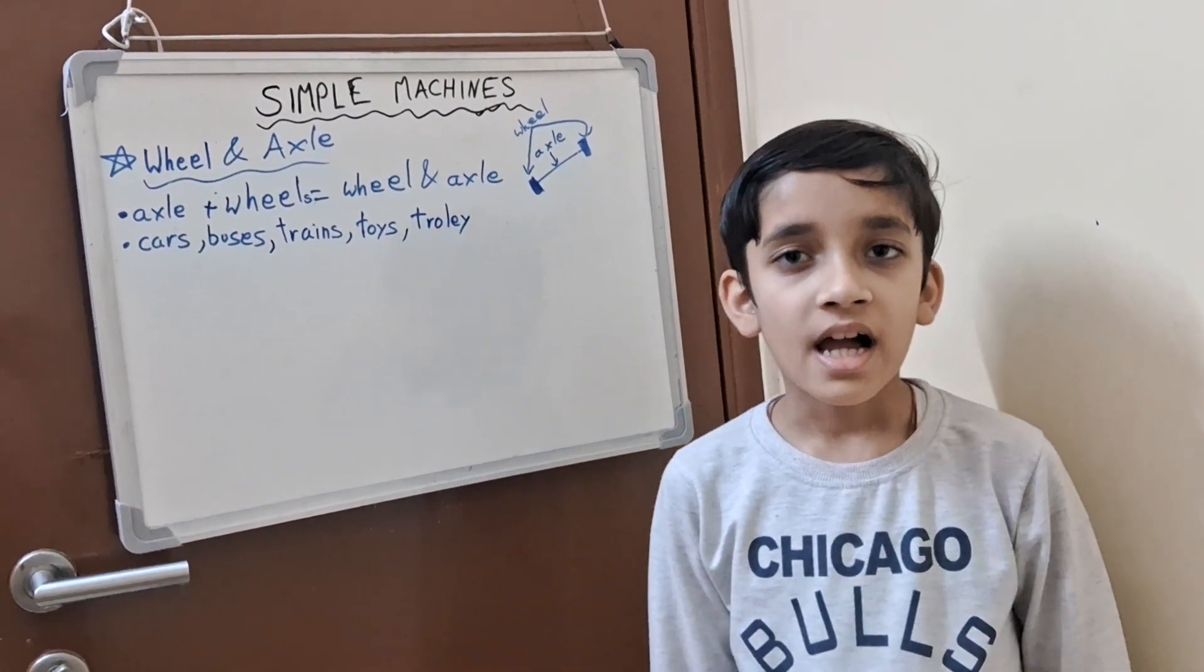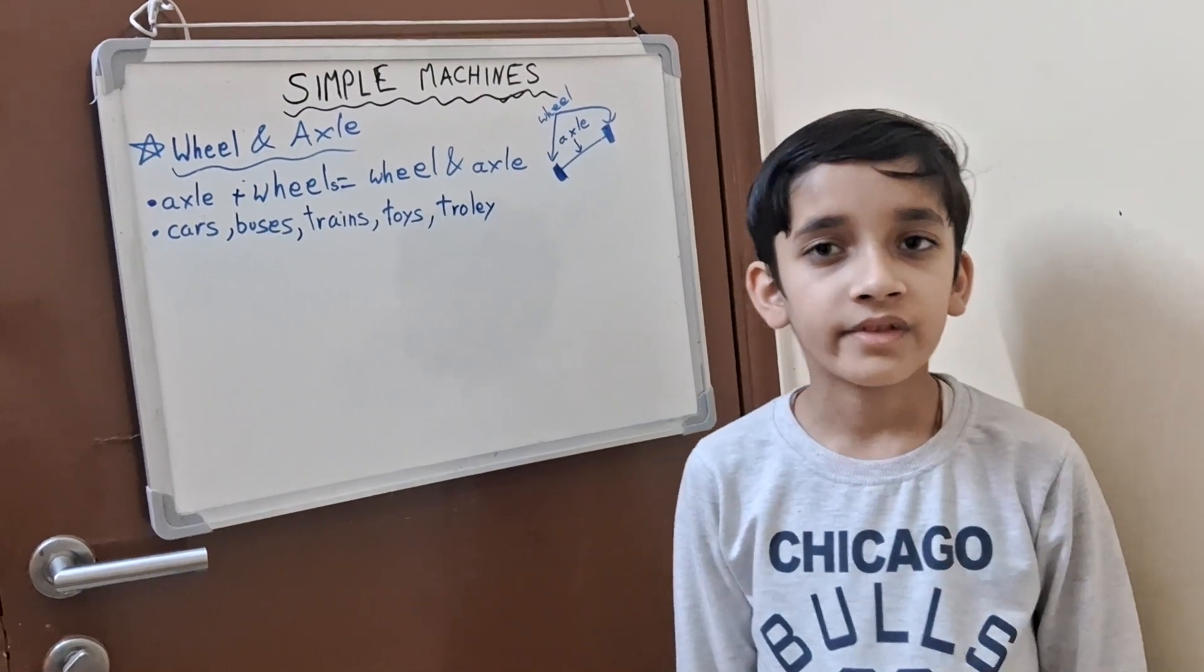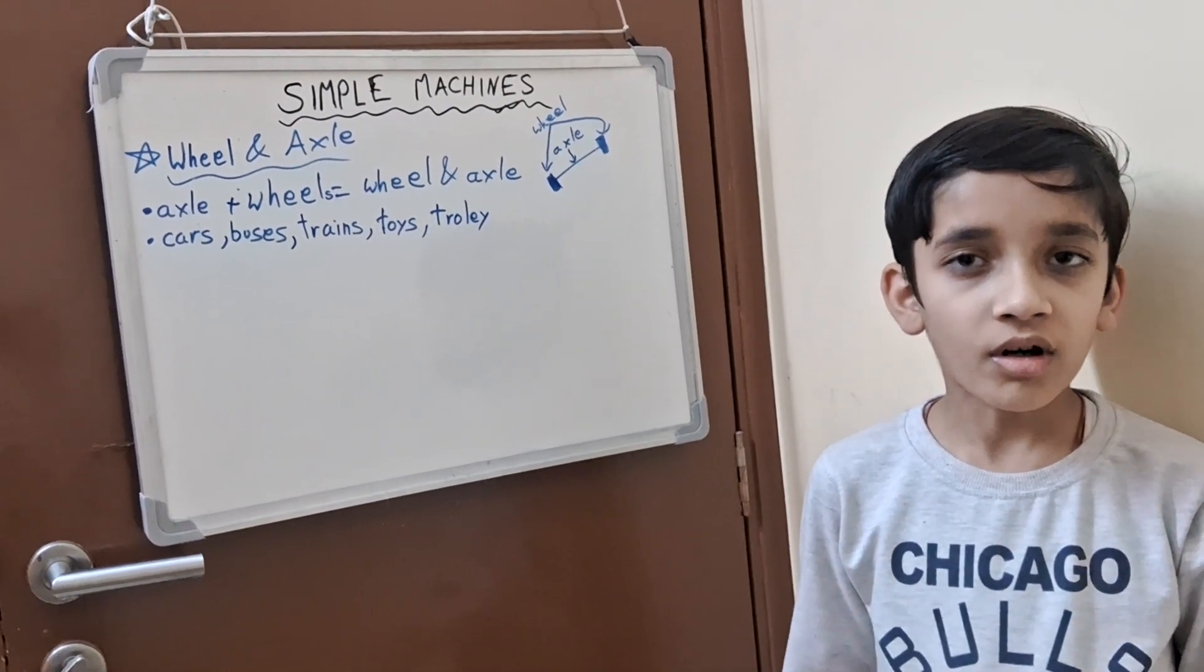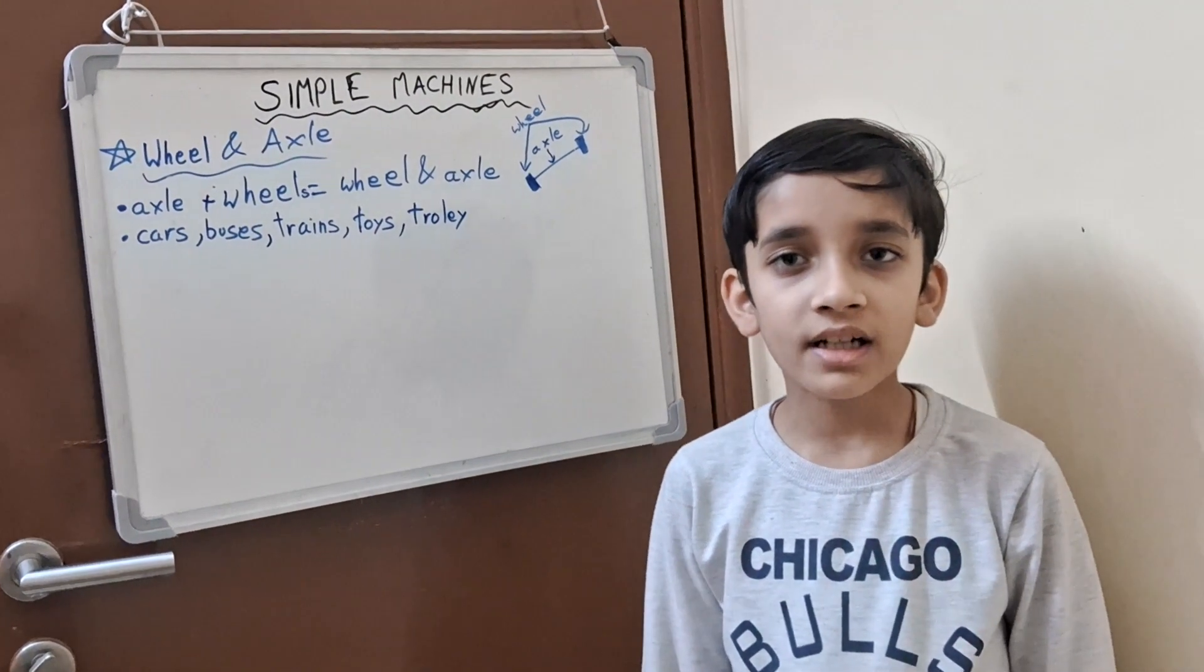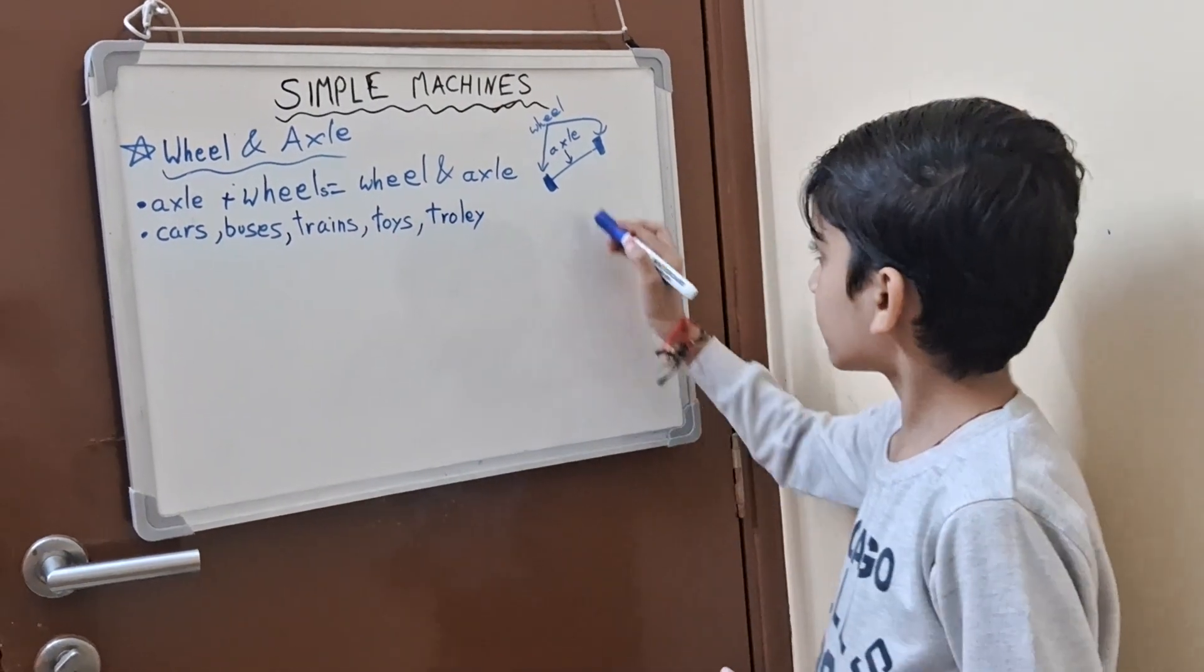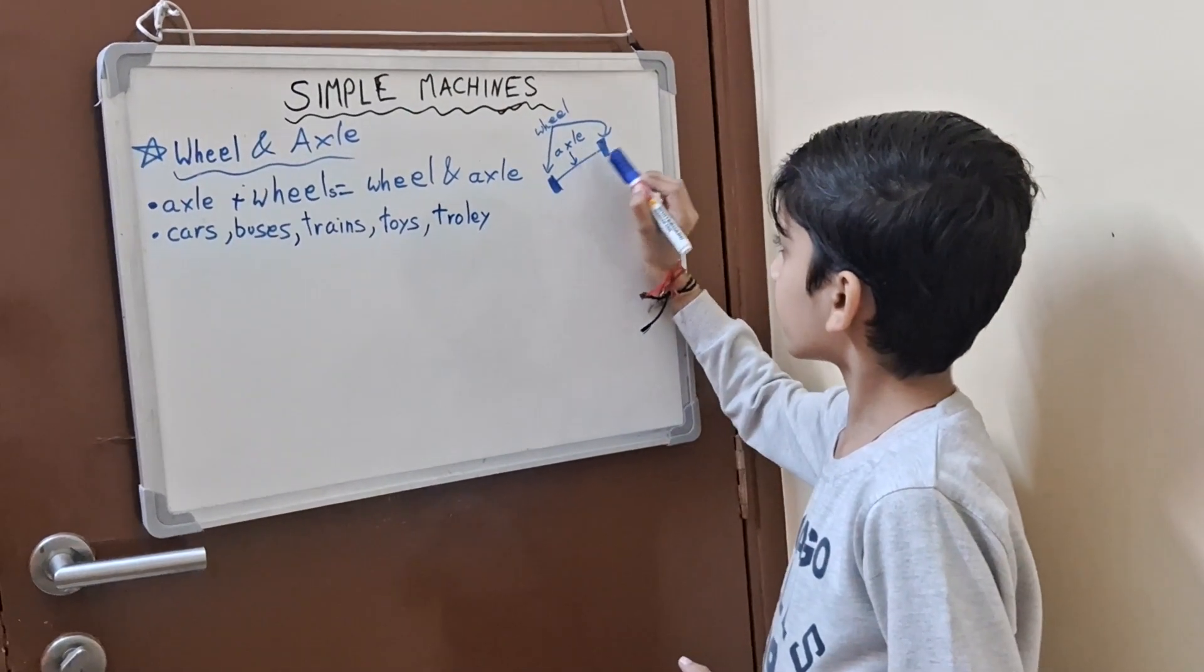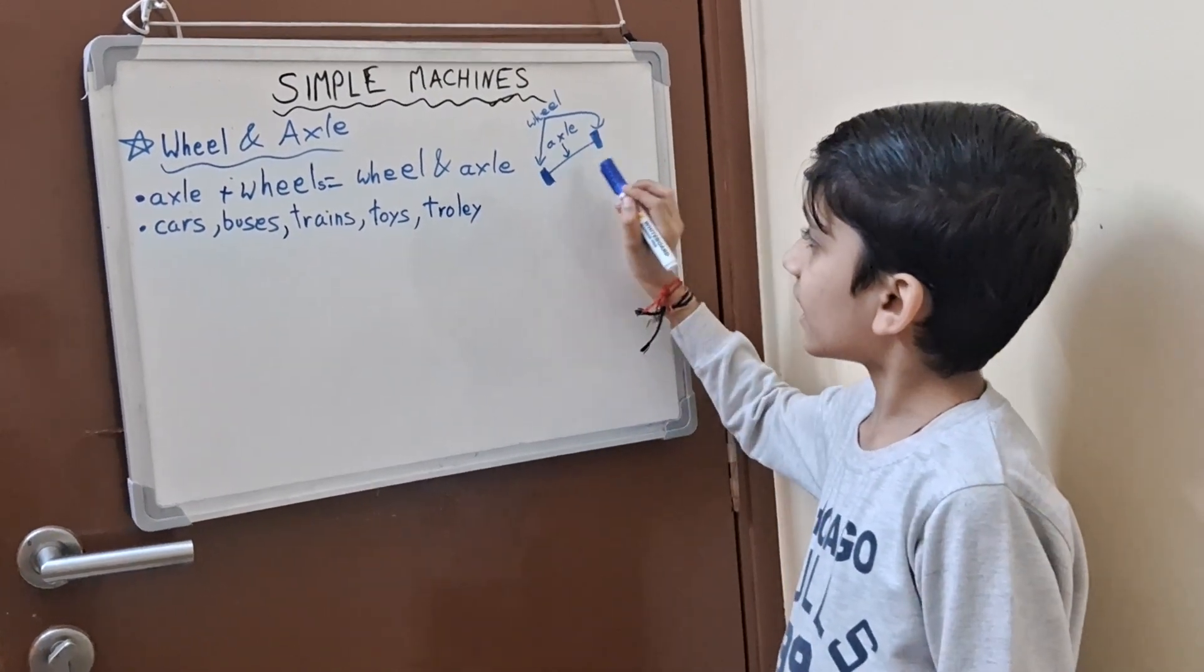These machines have a rod fitted with the wheel. The rod is known as the axle. The wheel and the axle together make the simple machine wheel and axle. See, this is the wheel and this is the axle.